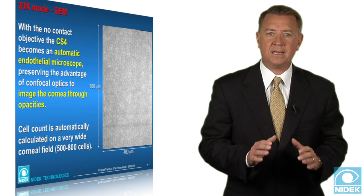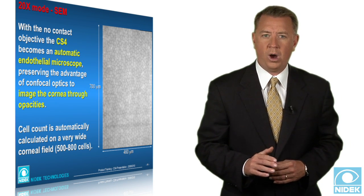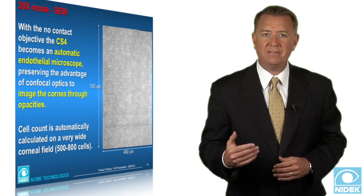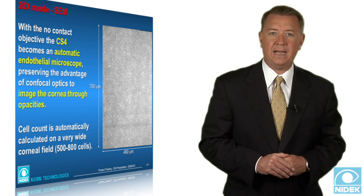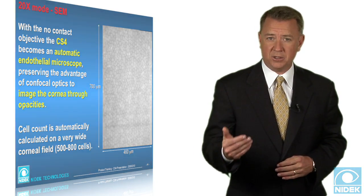Cell count is automatically calculated on a very wide corneal field, 500 to 800 cells. Due to the wide area, reliability of count is increased.